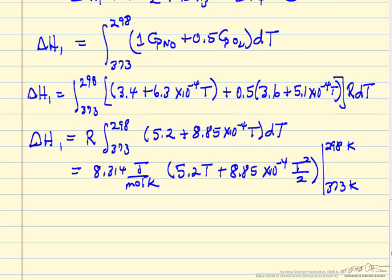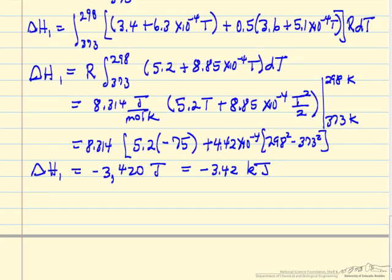We add up the first term, do the multiplication, bring the R outside. We'll do the calculation in joules per mole, and then we've done integration here with these limits, so we need to substitute in the limits. T final minus T initial, 298 minus 373 is minus 75, and then we have these values squared. We do the calculations and end up with delta H1 minus 3.42 kilojoules; it's negative because we're taking energy out to cool it.